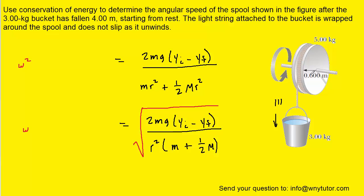The radius of the spool, of course, is given as well, and then g is a constant. The y sub i minus y sub f, that's essentially a change in vertical displacement, and the question states that the bucket has fallen 4 meters, so that would be that change in vertical displacement.